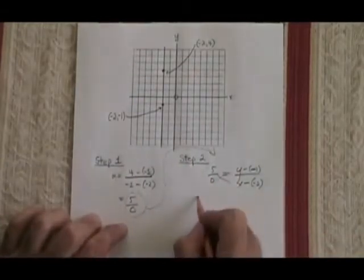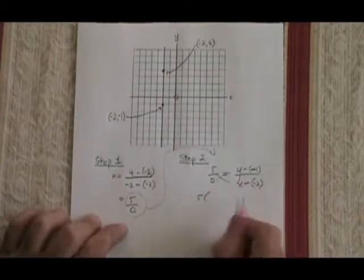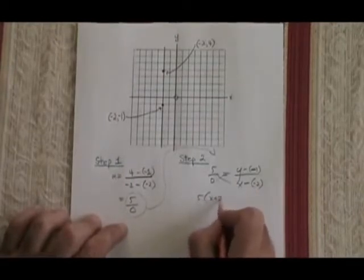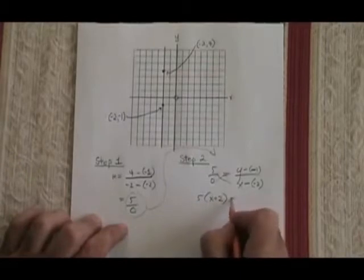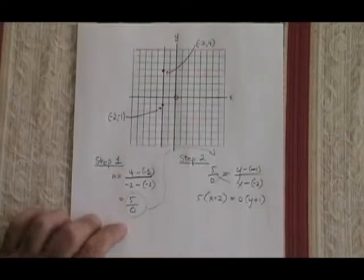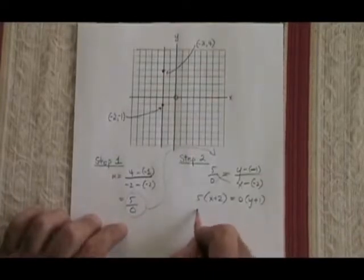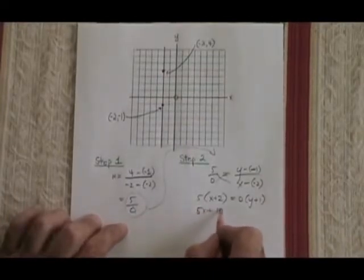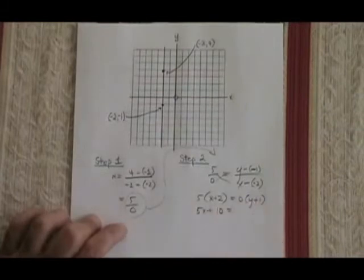Cross-multiplying, I end up with 5 times x minus negative 2, which is the same as x plus 2, so I'm writing it like that, equals 0 times y minus negative 1, which is the same as y plus 1. Simplifying, 5x plus 10 equals 0 times this bracket is 0.